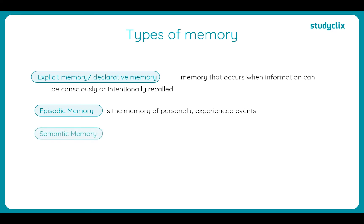Next we have semantic memories, which is the memory of facts and knowledge of the world. Knowing what semantic memories are is itself a semantic memory. Any definitions you can think of are semantic memories — how many sides a square has, what colour the sky is — all semantic memory.